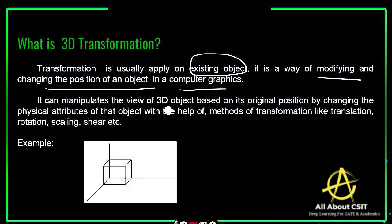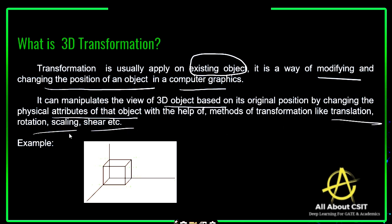Transformation can manipulate the view of a 3D object based on its original position by changing the physical attributes of that object. The methods of transformation include translation, rotation, scaling, shearing, and reflection. By changing the physical attributes of the object, the object is going to vary. These are all the manipulations you can perform on a 3D object.